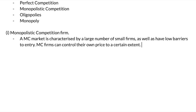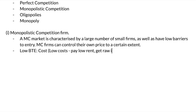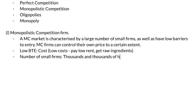All these different things are what makes them slightly more unique. Hence, MC firms can actually control their own price to a certain extent. Now we have to go on and explain our characteristics. Low barriers to entry for an MC firm usually refers to costs — hawker center stores have very low costs. It's very easy to set up; you just need to pay low rent and get raw ingredients. There are thousands and thousands of hawker food stores in Singapore, which makes it very clear that it's an MC firm. Oligopoly is only three to six firms in one market, whereas a monopoly is only one dominating firm.